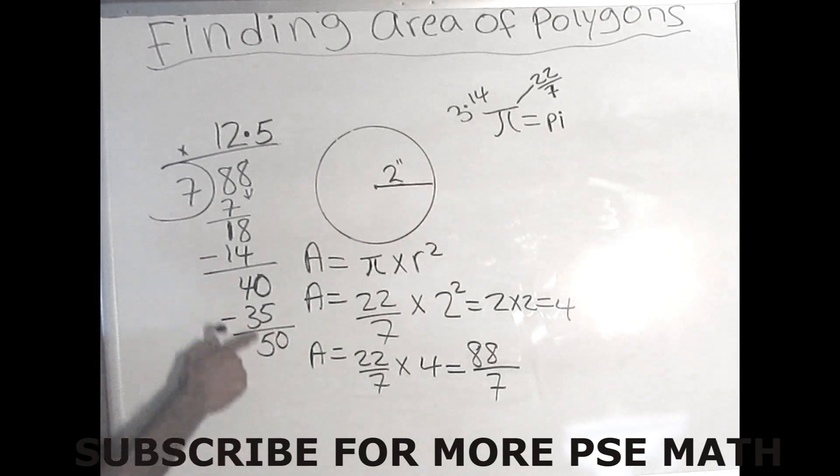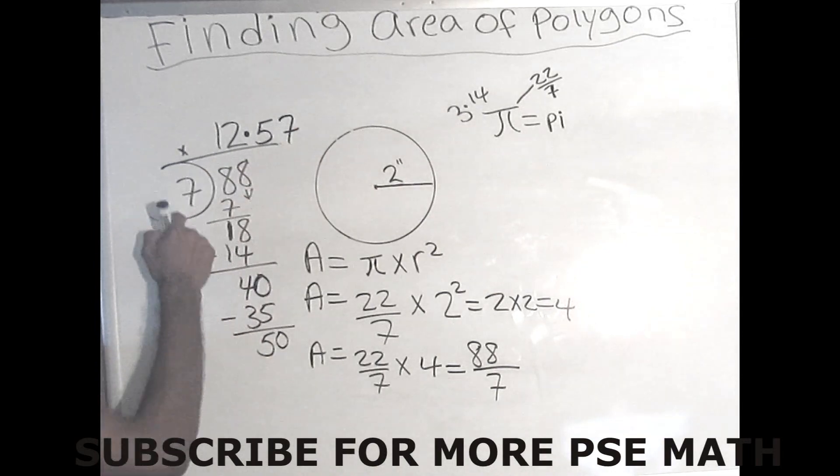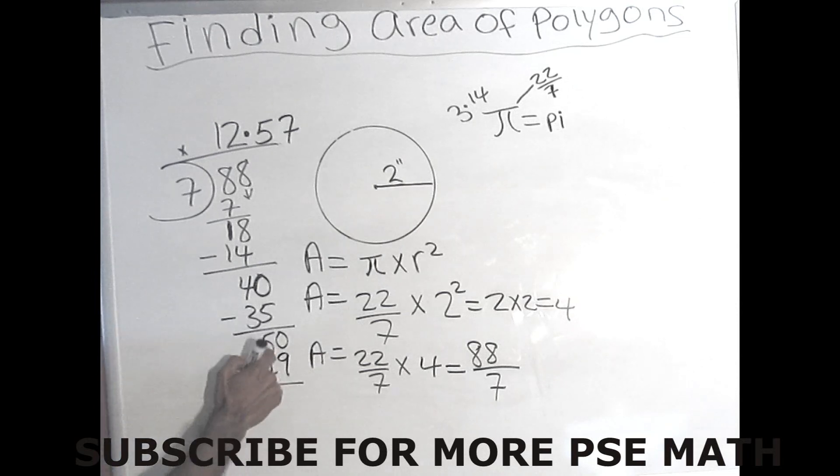Alright. So 7 could go into 50 seven times. And 7 times 7 is 49. And when you minus 50 from 49, we're left with 1. We could stop there.